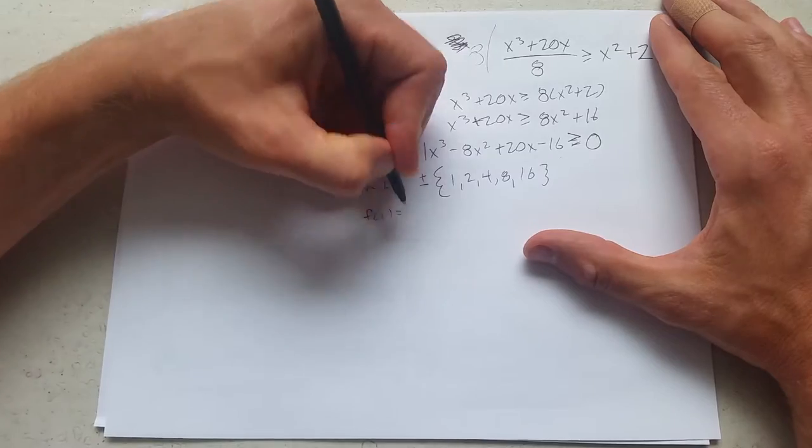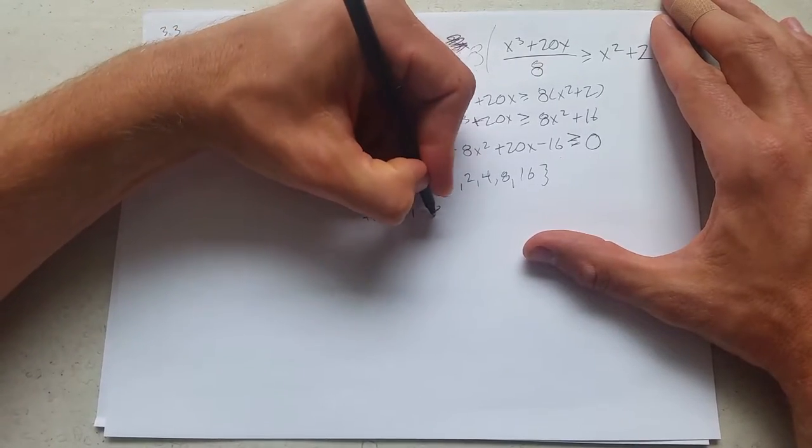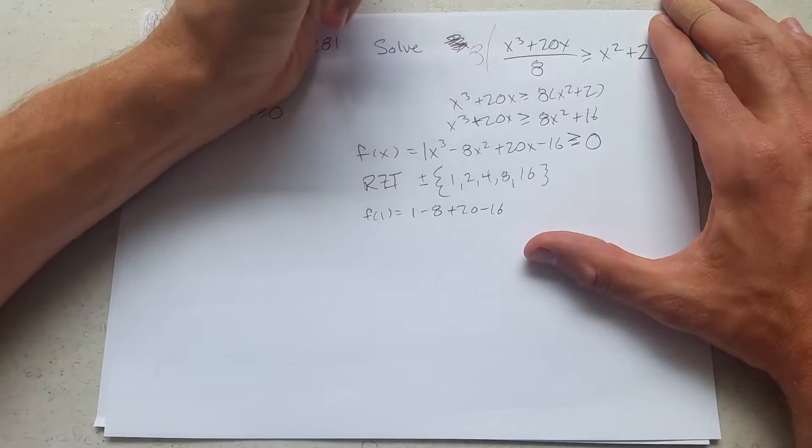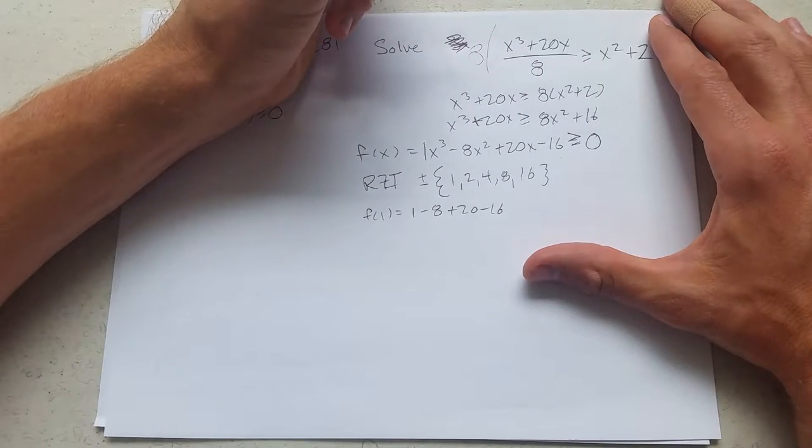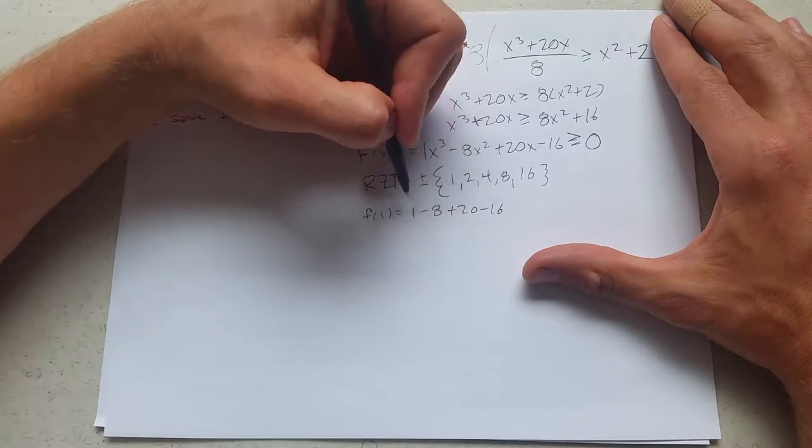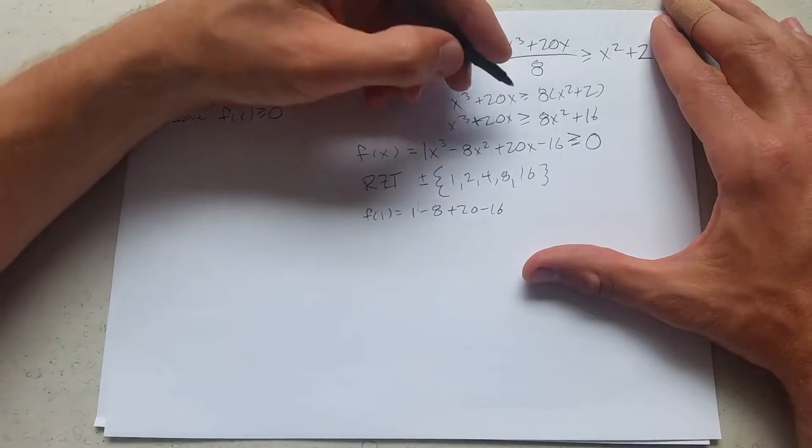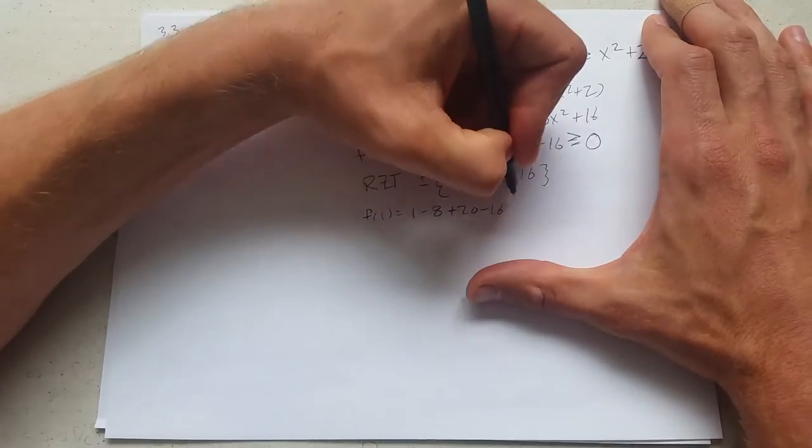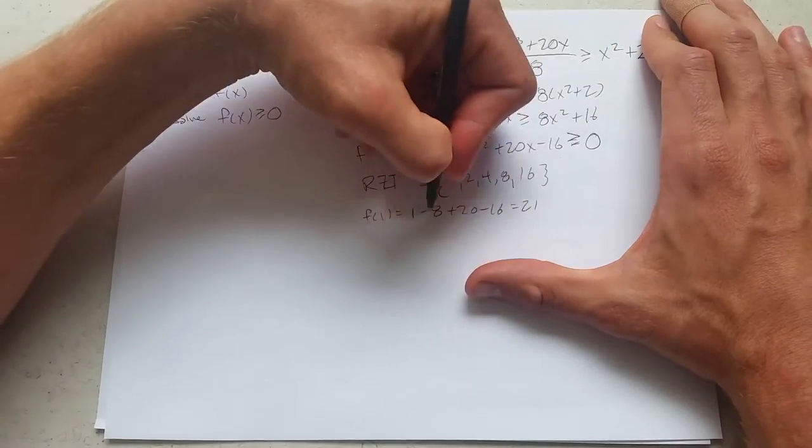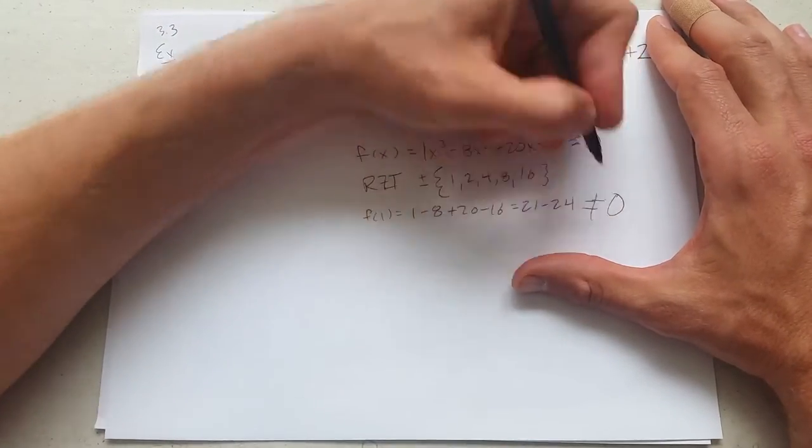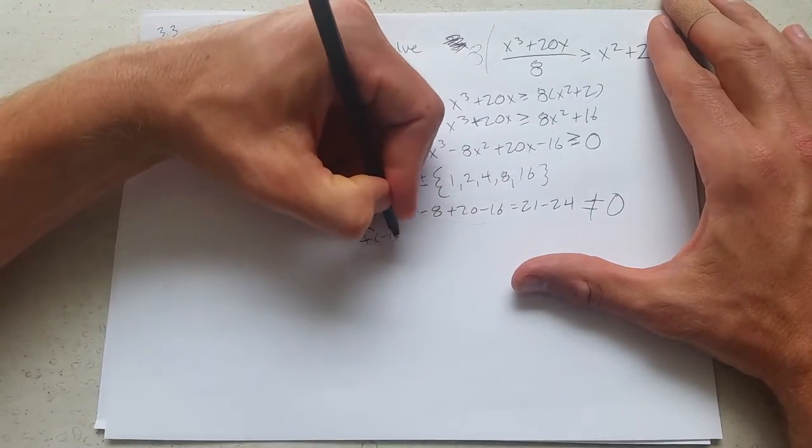So what is f of 1? We have 1 cubed minus 8 times 1 plus 20 minus 16. And unfortunately, this is not going to be 0. How do I know? This is all even and that's odd. So there's no way we're going to get a 0. You can add 20 plus 1 is 21 minus 8 minus 16 minus 24. Either way, not 0.